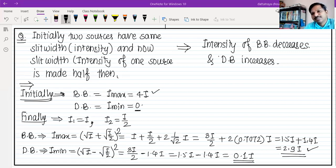If intensity is doubled or halved, dark bench intensity is not zero. Bright bench intensity and source intensity are related.